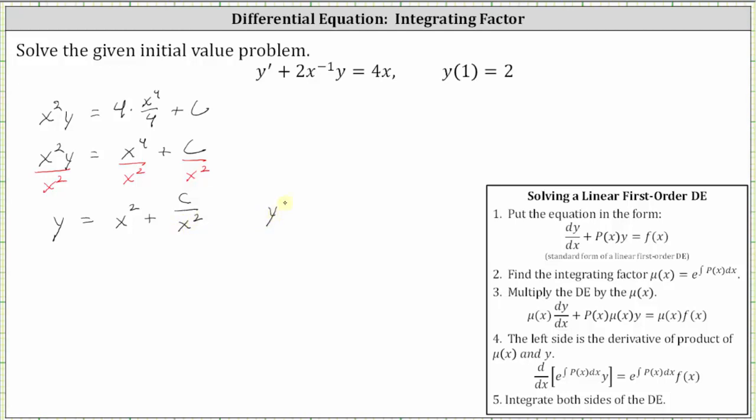Now that we know y of one equals two, we substitute one for x and two for y, then solve for c to find the particular solution. Substituting, we have two equals the square of one plus c divided by the square of one, which gives us two equals one plus c. Subtracting one from both sides, c equals one. To find the particular solution, we substitute c equals one into the general solution, which gives us y of x equals x squared plus one divided by x squared.